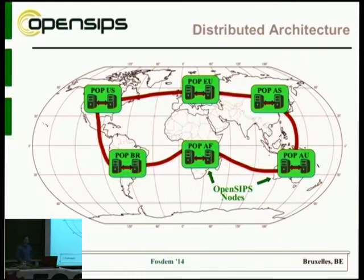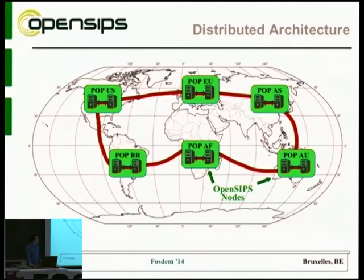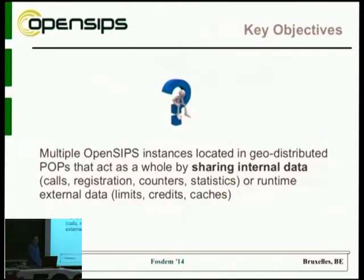Within each point of presence, within each data center, you'd have two or more OpenSIPS servers able to handle the traffic. This way we can handle both the failure of a single server and the failure of one or more data centers. You would need some way of communication between all these points of presence, because you're providing a single SIP service to your users and want to synchronize various information. Our objective is to have multiple geo-distributed points of presence that act as a whole by sharing multiple types of information.